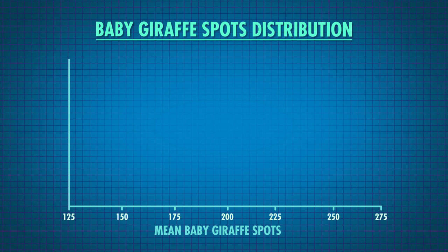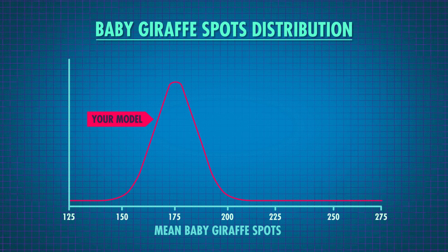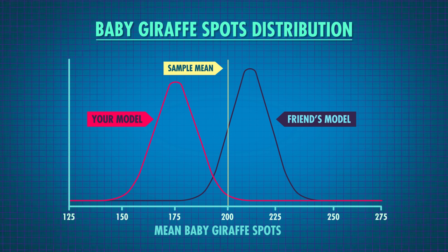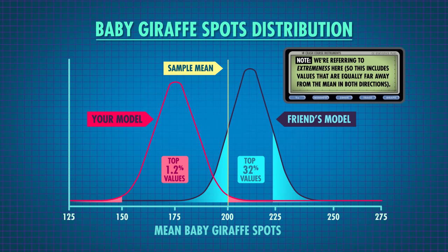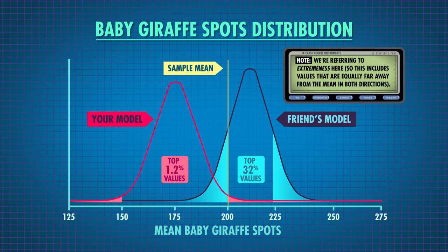Both you and your friend have a model about what the population distribution of baby giraffe spots looks like. If you're right, the sampling distribution of all possible sample means looks one way; your friend's model gives a different distribution. Looking at where our sample mean of 200 lies, we're more likely to get a mean of 200 under your friend's hypothesis. Under your model, a mean of 200 is in the top 1.2% most extreme values, whereas in your friend's model it's only in the top 32%, making it pretty common.